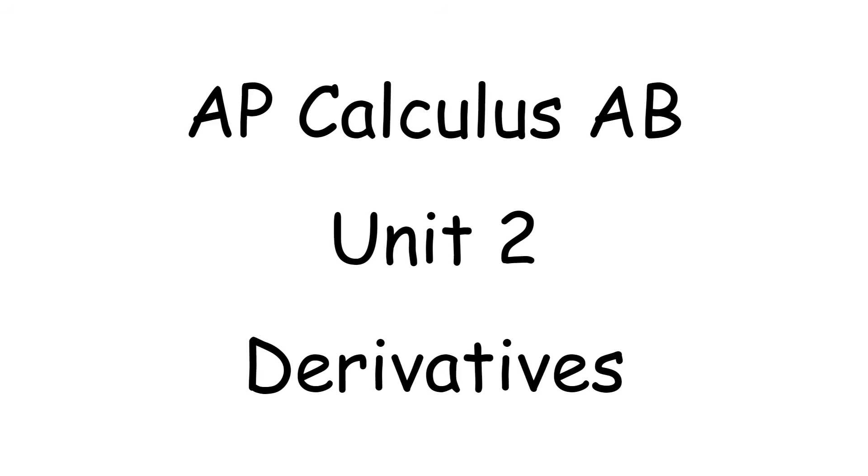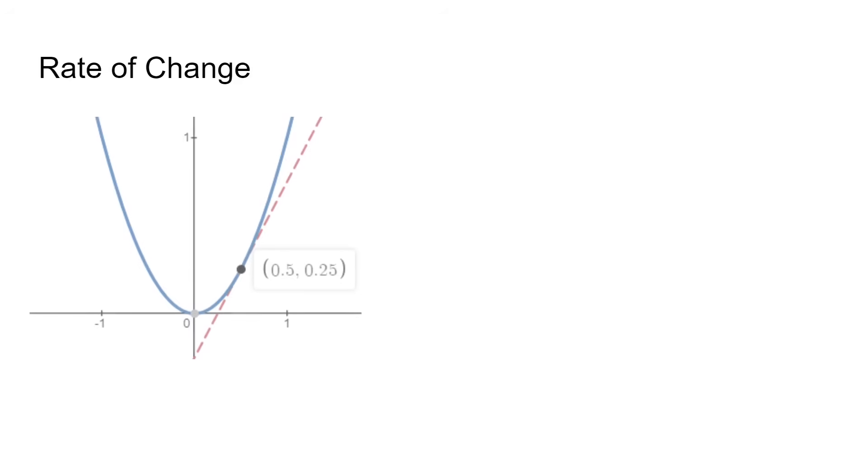First, we need to know what a derivative is. It is the rate of change of a function, and basically is the slope. The instantaneous rate of change is the slope at one point of the function, and is also referred to as the slope of the tangent line, since it only touches the function at one point.